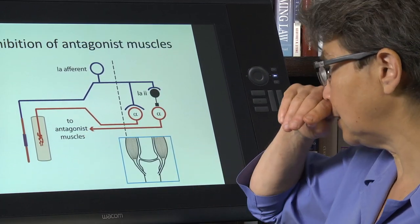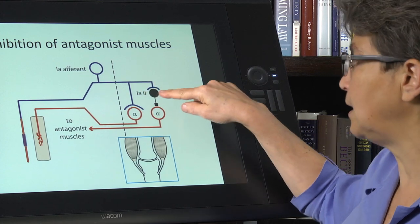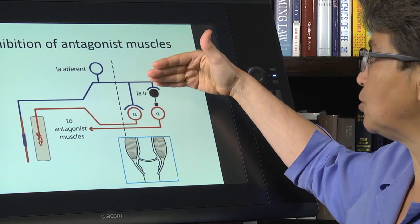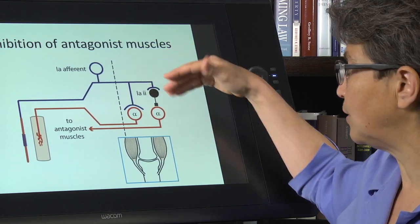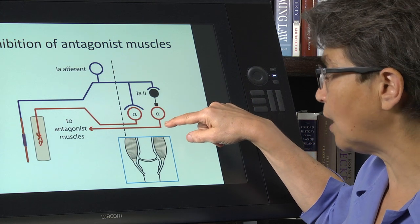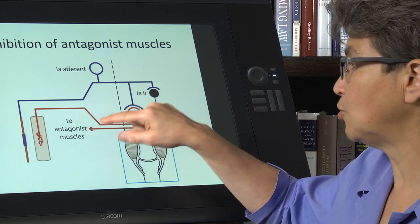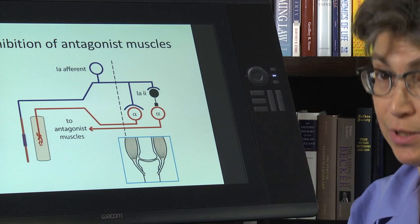And if we look at this, you see that the 1A inhibitory interneuron is interposed between the 1A afferent and the motor neurons that project off to the antagonist muscles.